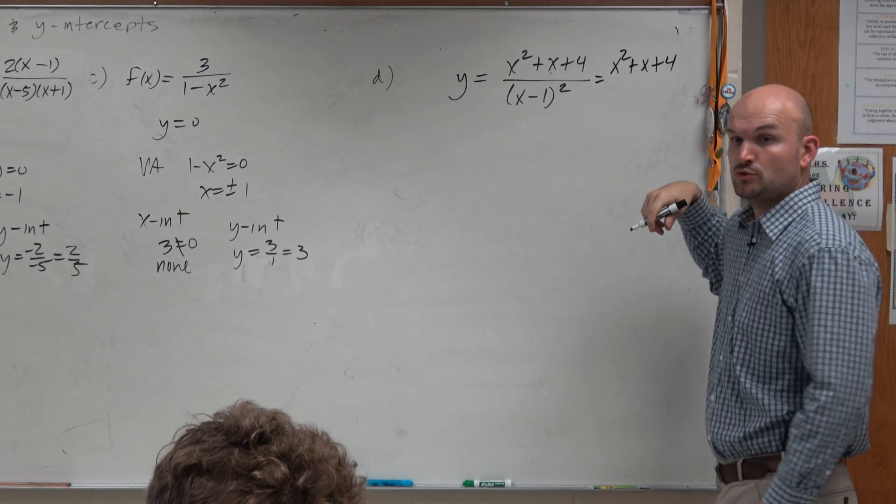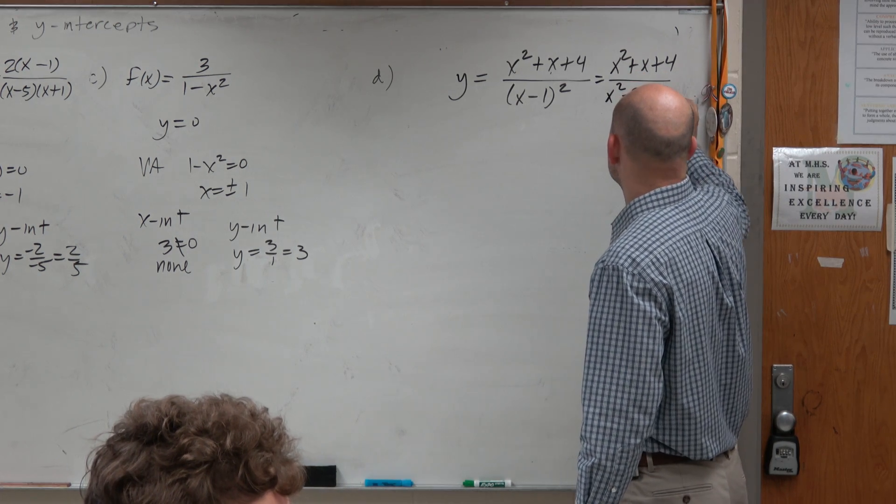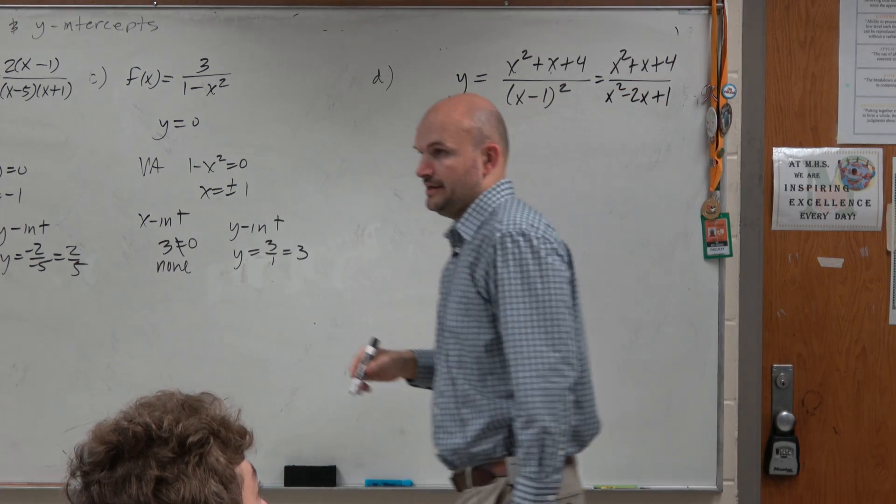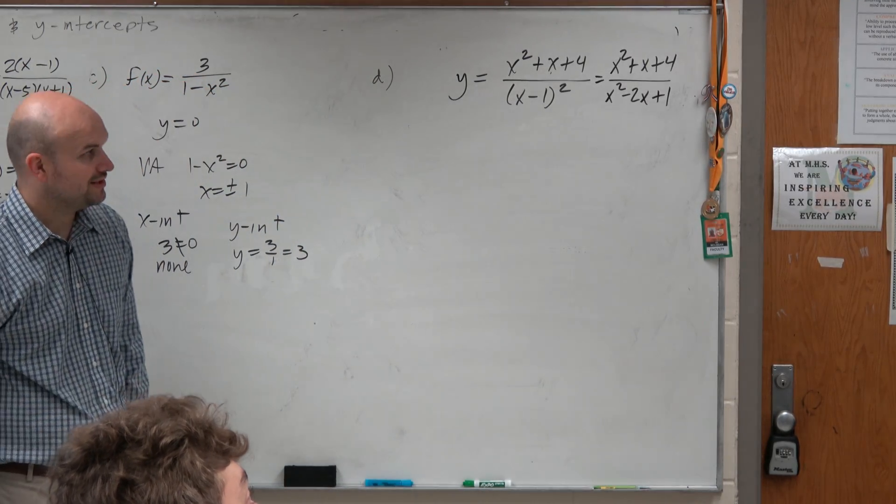That's (x - 1)², which is (x - 1) times (x - 1), which hopefully you guys know is x² - 2x + 1, right? Don't want to do x² + 1 or something like that.